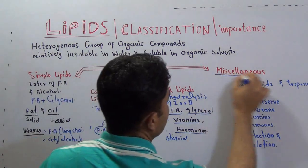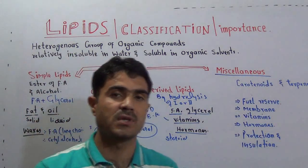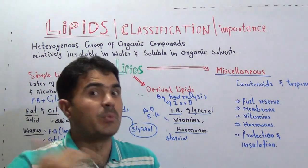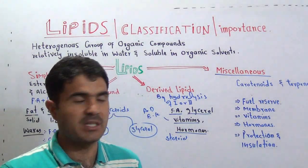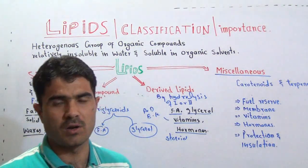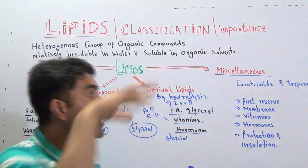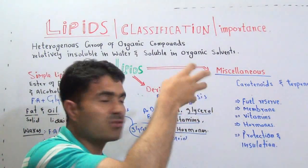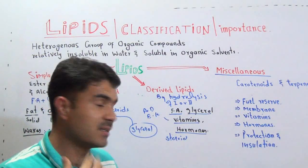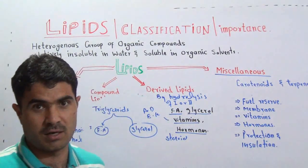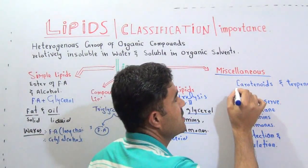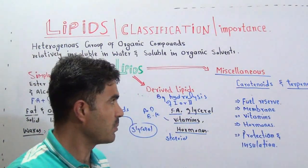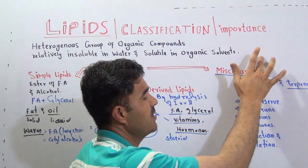Now, miscellaneous compounds are those compounds which possess properties of lipids but are not lipids themselves. There is no concept of fatty acid or alcohol in them. They are brought into the category of lipids because of their properties, but they do not contain any fatty acid or alcohol. Examples are carotenoids and terpenes.